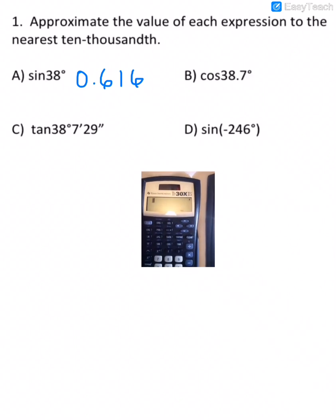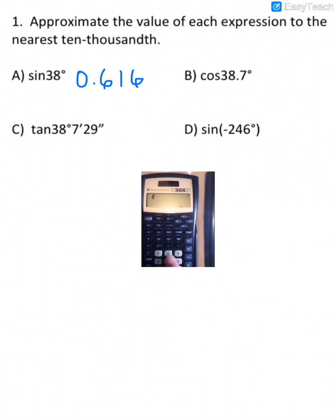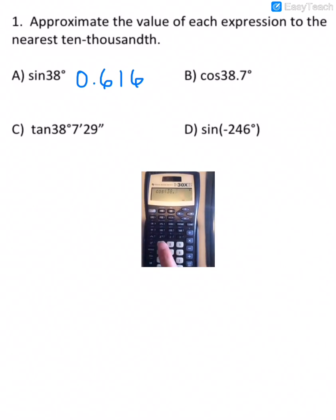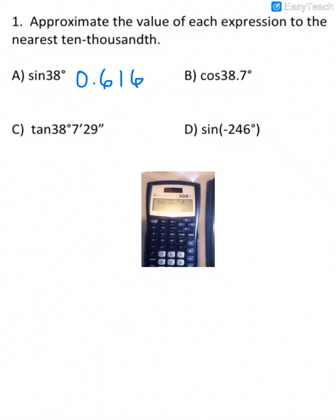Okay, so we're going to find the value of the cosine of 38.7 degrees. Okay, so we just press the cosine button, and 38.7, and hit enter.